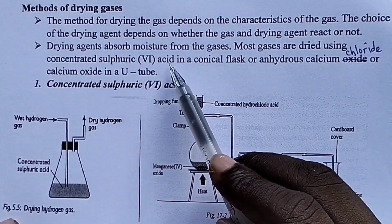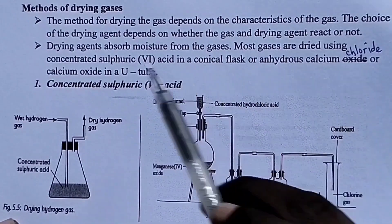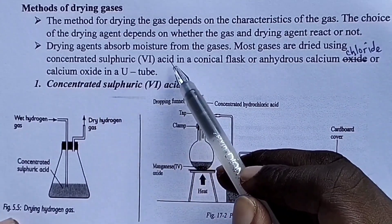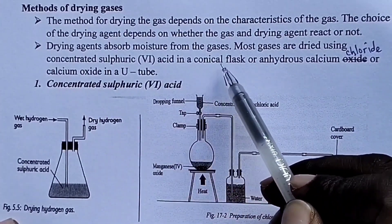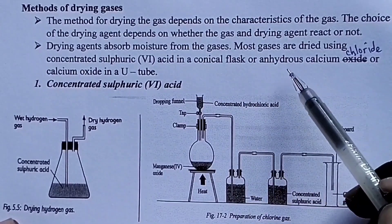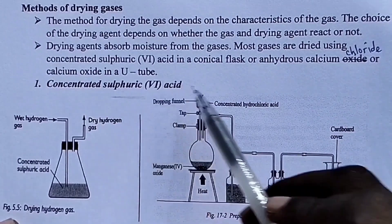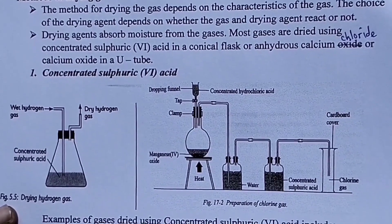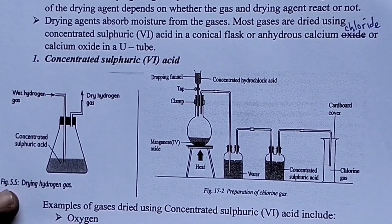The three drying agents are: one, concentrated sulfuric acid; the second is anhydrous calcium chloride; and the third is calcium oxide. If we are using concentrated sulfuric acid, it will be put in a conical flask. If you are dealing with anhydrous calcium chloride or calcium oxide, it will be placed in a U-tube. So we go to the first drying agent: concentrated sulfuric acid.